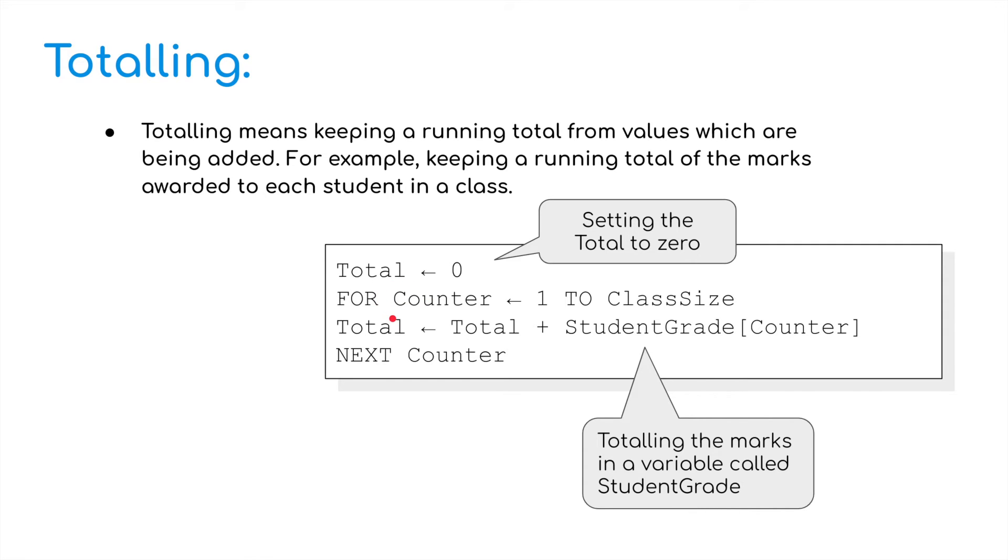Then we're going to do a for loop. So for counter, we're going to assign 1 to the class size. So we don't know how big the class size is, but whatever we've put in for the class size, it's going to go from 1 to whatever the number is. Then total, we're going to assign total plus the student grade, the counter. And then we're going to go to next counter. So what does that mean? We set the total to 0 and then we're totaling the marks in a variable called student grade. That's how totaling is going to work there. It's going to keep adding and adding the student grade to the number of students in the class.